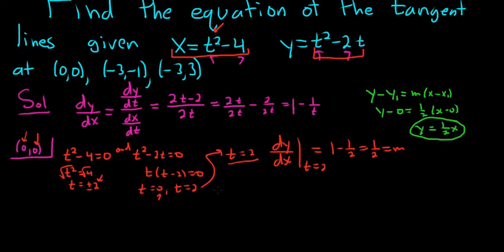All right, let's do negative 3, negative 1 now. Same thing. We take x, which is t squared minus 4, and we set it equal to negative 3. And we take y, which is t squared minus 2t, and we set that equal to negative 1. And we have to solve both of these equations simultaneously at the same time.